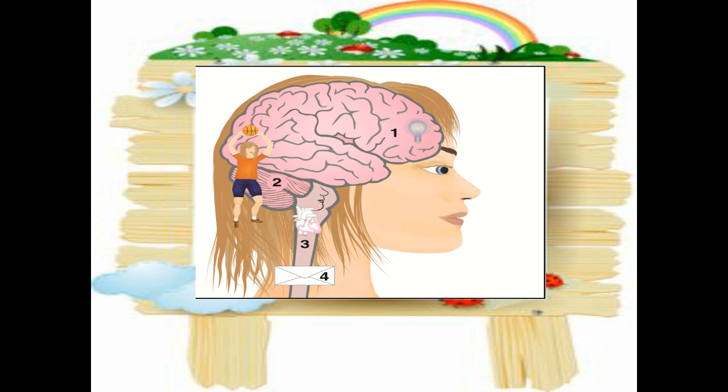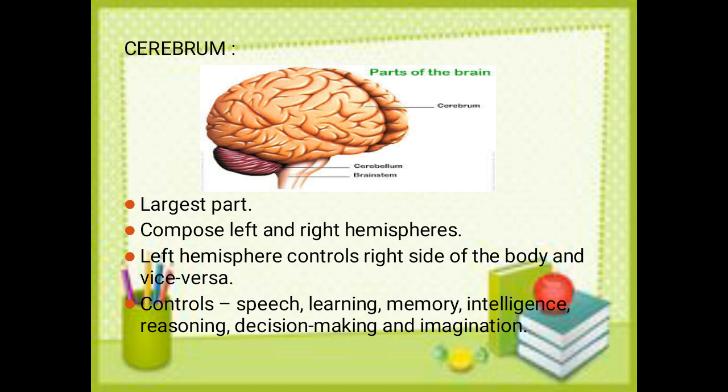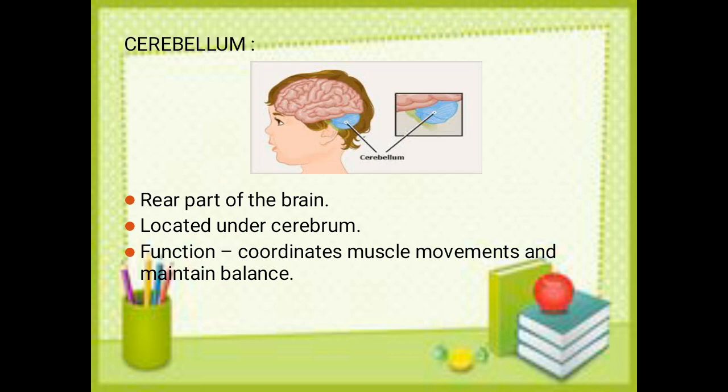The medulla oblongata is the stem-like structure responsible for breathing and heart rate. The cerebrum is split into two hemispheres — left and right. The left hemisphere controls the right side of the body, whereas the right hemisphere controls the left side. The functions of the cerebrum include speech, learning, memory, intelligence, reasoning, decision making, and imagination.